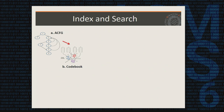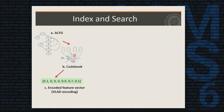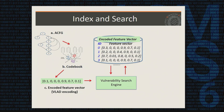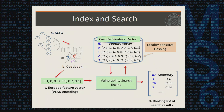We use the same encoding to generate two kinds of databases: one for vulnerabilities and one for the firmware images we have. We use locality-sensitive hashing to store these feature vectors, and when we perform the search, we generate a ranked list sorted by similarity. The final step is human investigation on the search results.